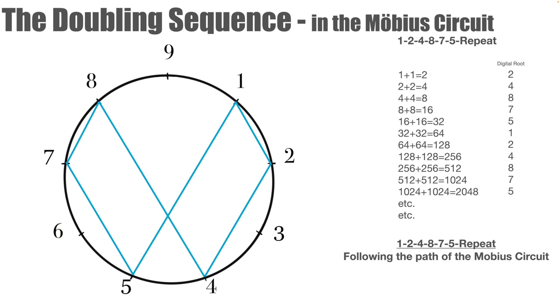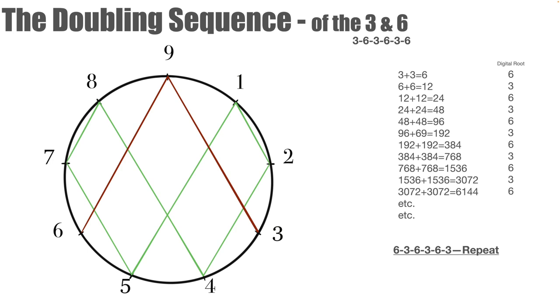The doubling sequence of the three and the six. According to Marco, the three and the six constitute a completely different system to the 1, 2, 4, 8, 7, 5. In fact, the 3, 6, and the 9. The three and the six have their own doubling sequence. If we take the three and double it, it's six. If we take the six and we double it, it's 12. If we use the digital root of 12 to reduce it, it's one plus two equals three. And then if we again double 12, we'll get 24. Two plus four is six. And this pattern just repeats endlessly again.